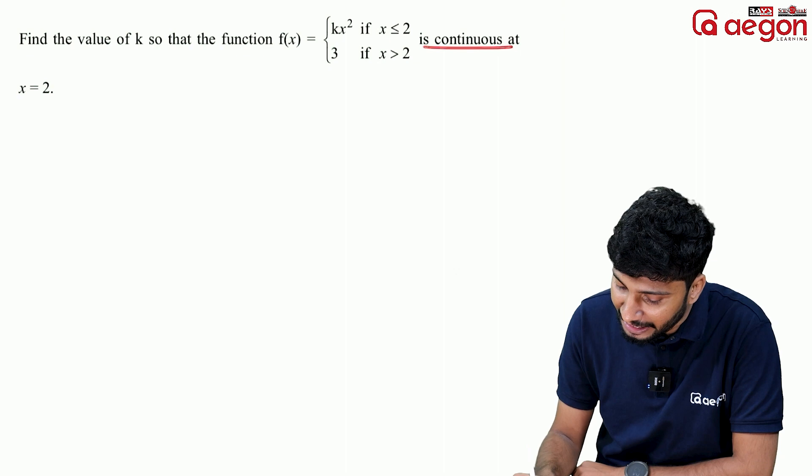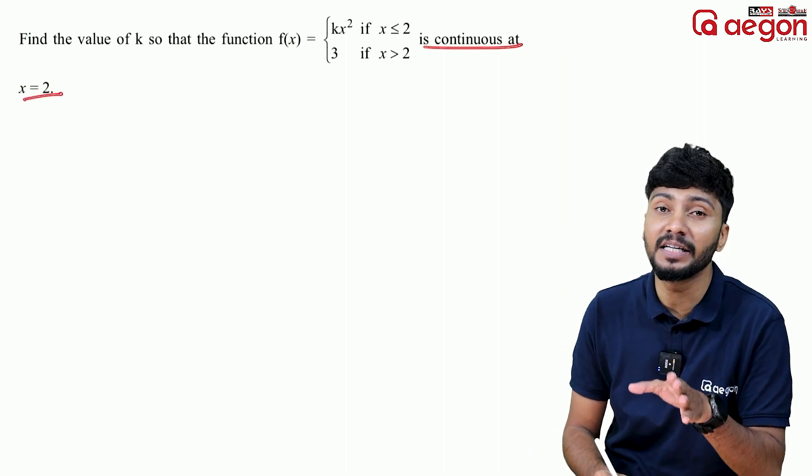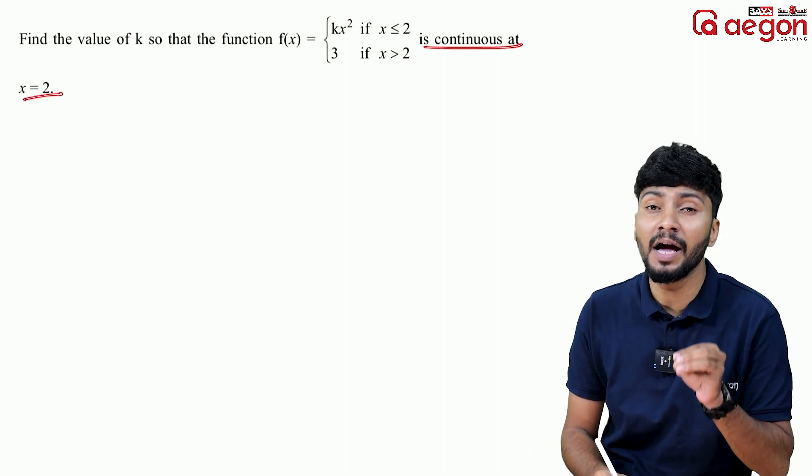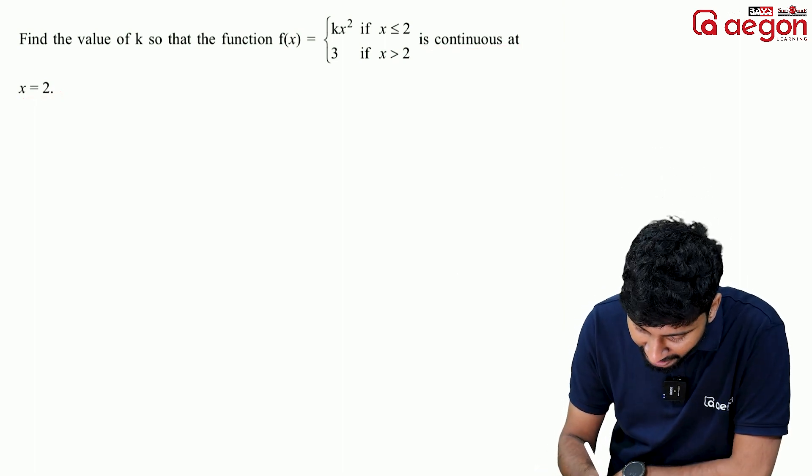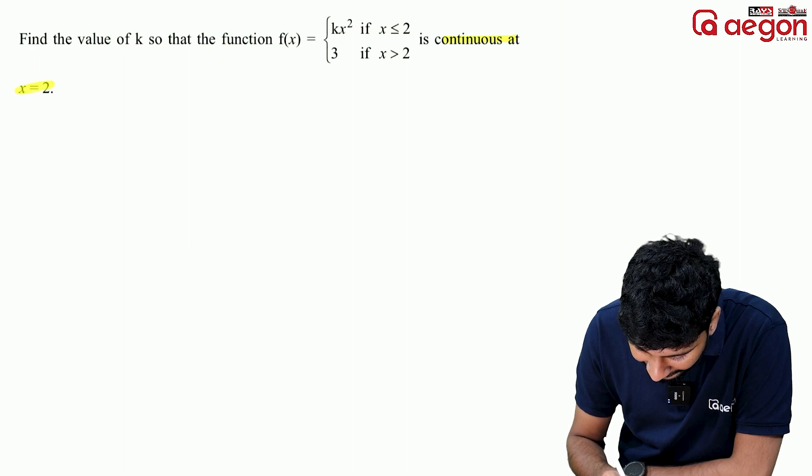The function f(x) equals kx² is continuous at x equal to 2. We need to find the value of k so that the function is continuous at x equals 2.